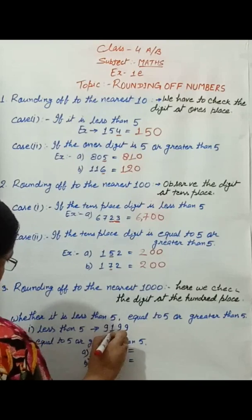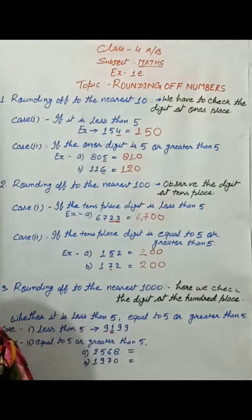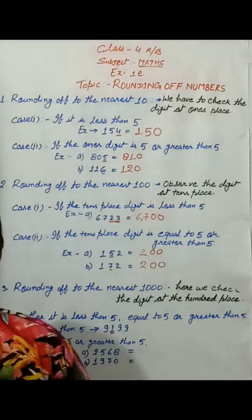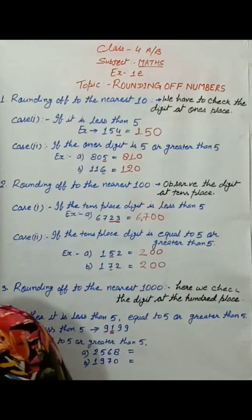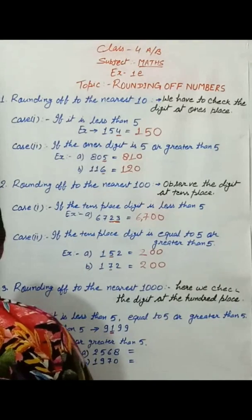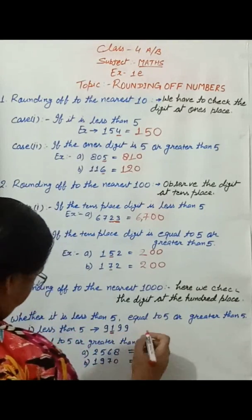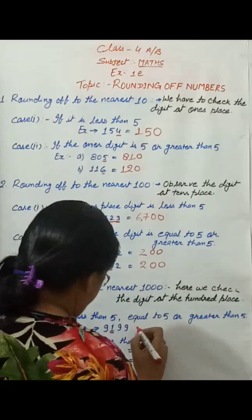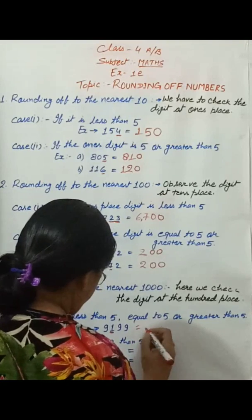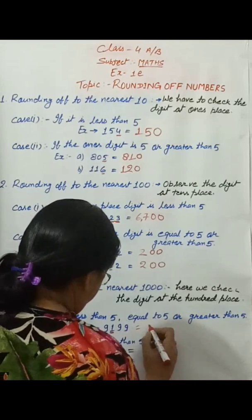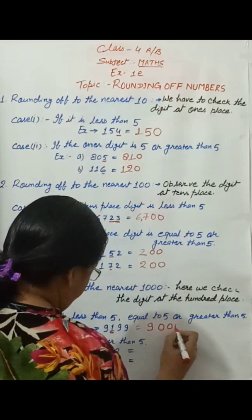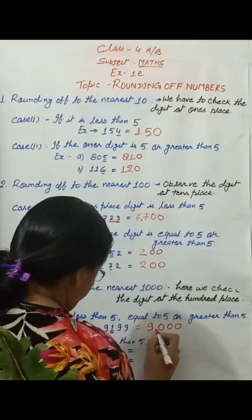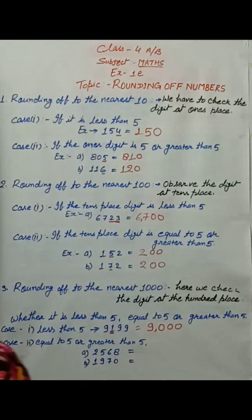It is less than five. So here, replace the hundreds, tens, and ones digits by zero and retain the other digits as they are. For example, this gives nine zero zero zero — that is nine thousand.